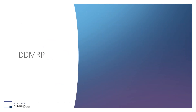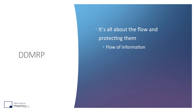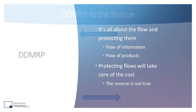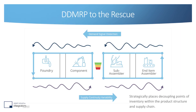DDMRP focuses on the flow — how to protect the flow of information through the supply network and the flow of products downstream within that same network. By taking care of flow, it reduces cost, whereas focusing only on cost does not improve flow. By positioning a buffer between a component and a subassembler, DDMRP minimizes the propagation of distortions both upward and downward, because the buffer absorbs that distortion. One of the first steps of DDMRP implementation is to position those decoupling points so that inventory is always available at that point in the supply network.